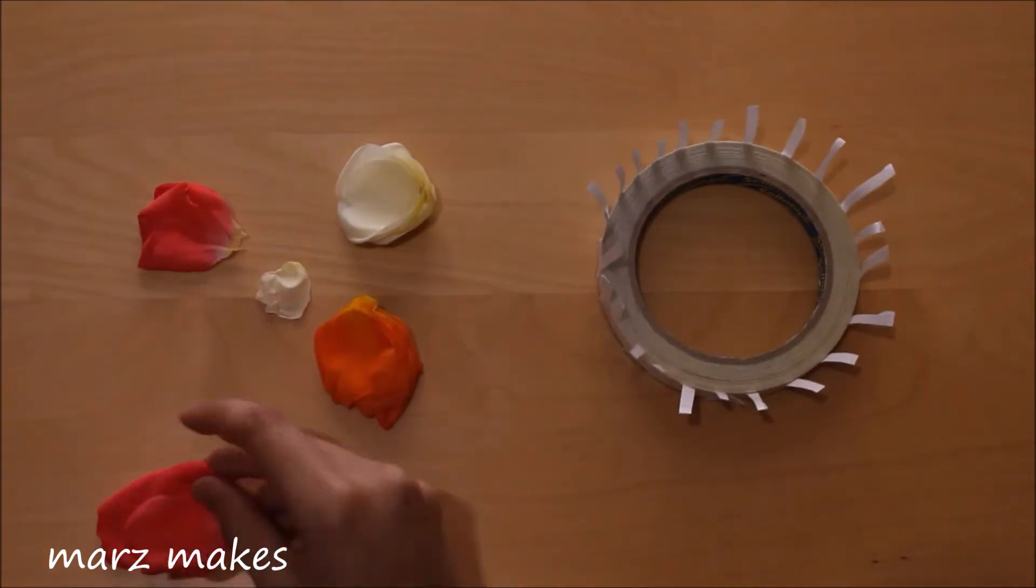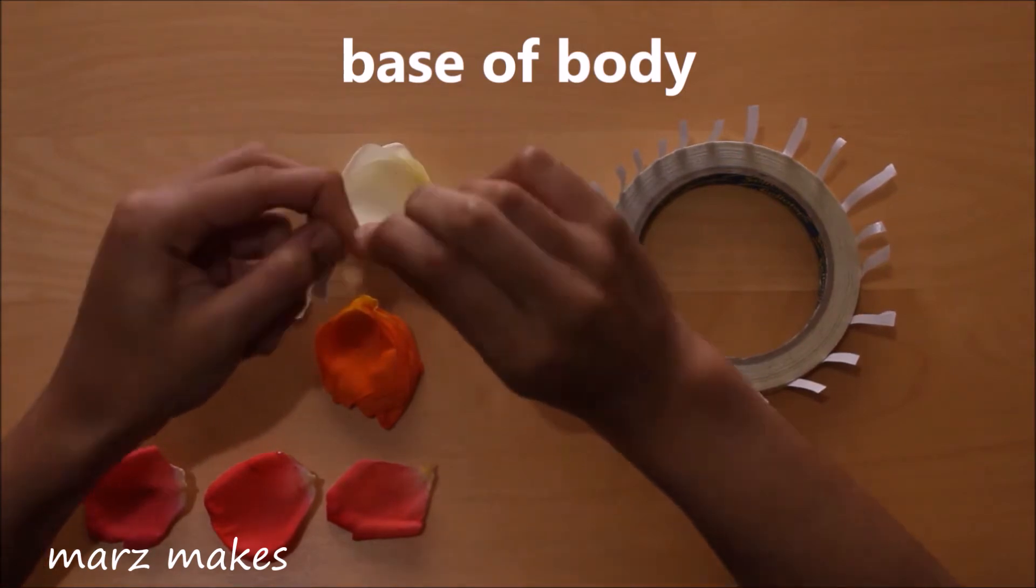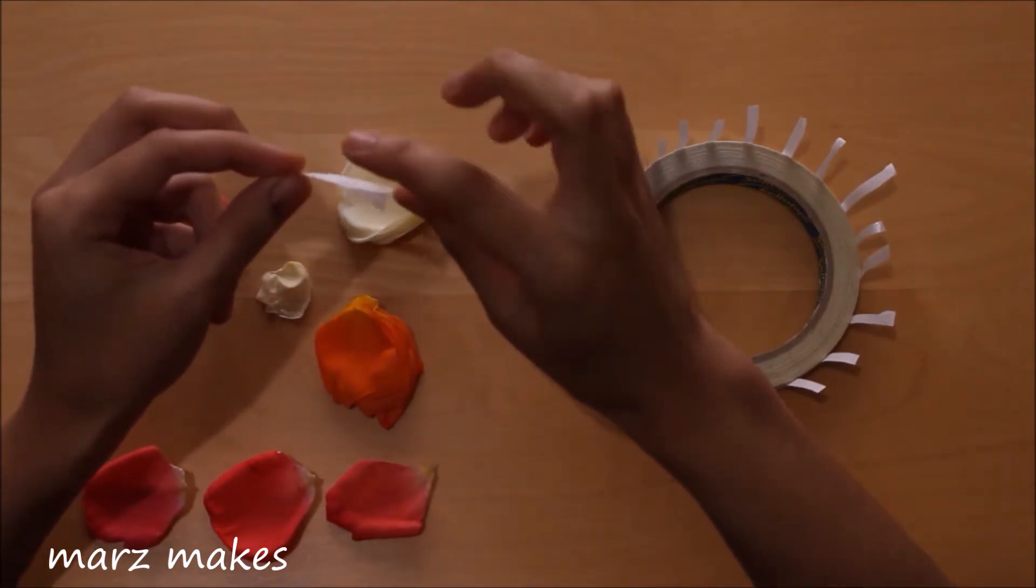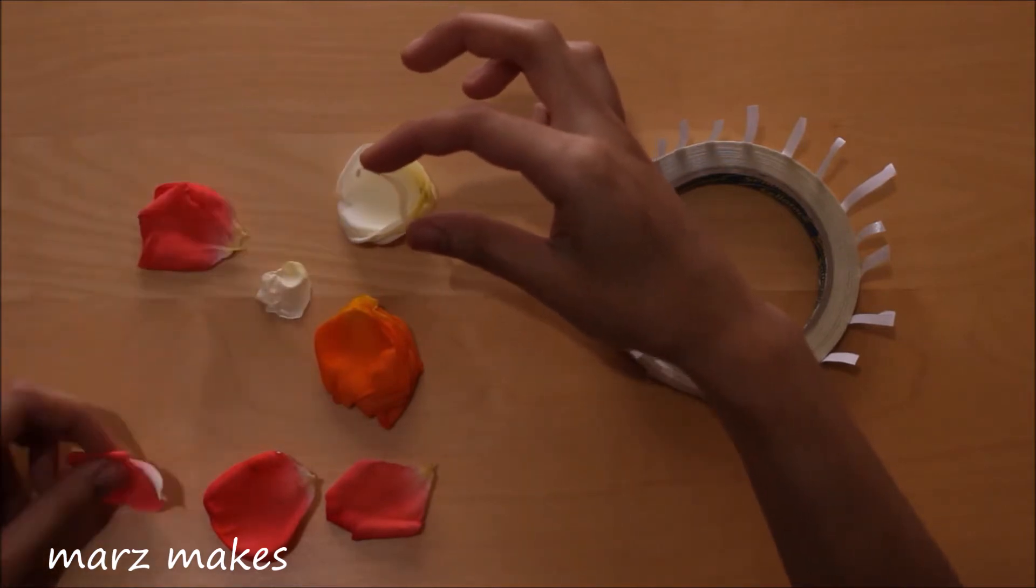First I'm making the bottom of the body using three large petals. The easiest way to peel off the tape is by peeling one end off with your nail and then keeping it between your finger and thumb.